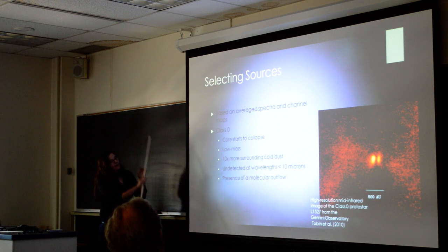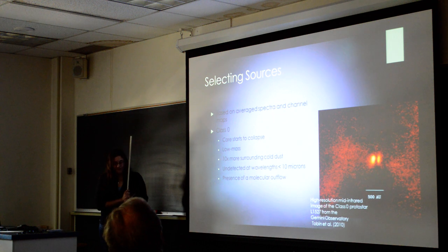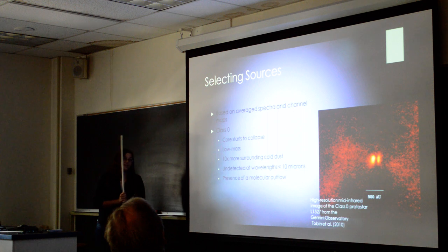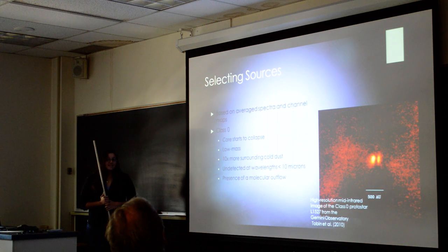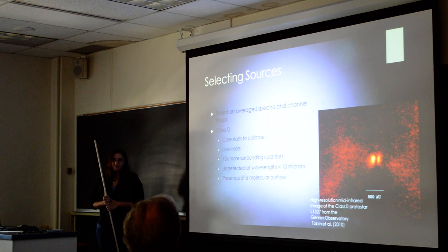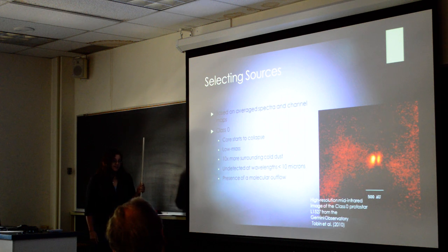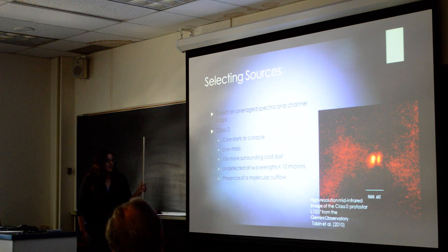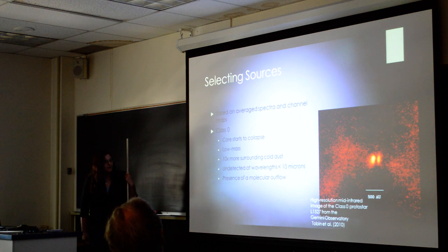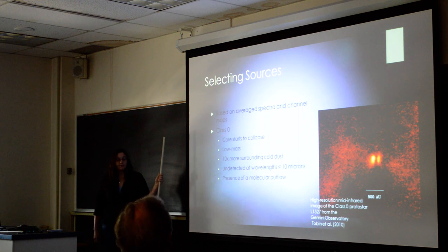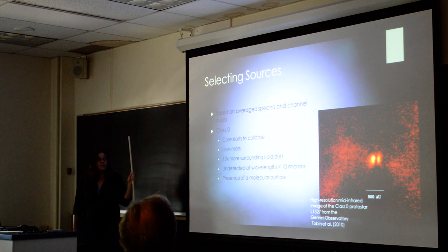A class zero protostar is when the core starts to collapse. It has very low mass. It has ten times more surrounding dust than most of the other classes of protostars. It's very young. You can't detect it at less than 10 microns. And one of the biggest things to find a class zero source is that it has a presence of molecular outflow, which is what we were studying.